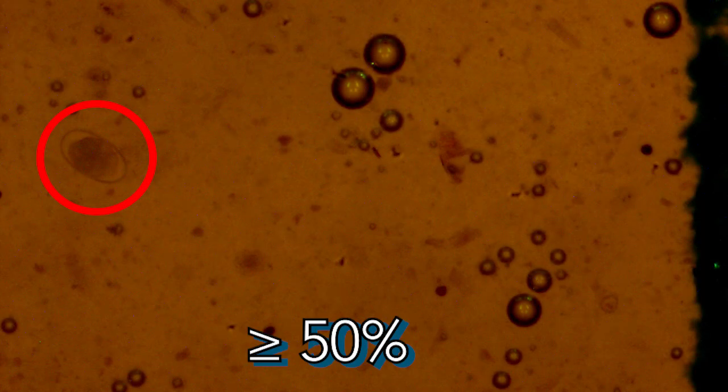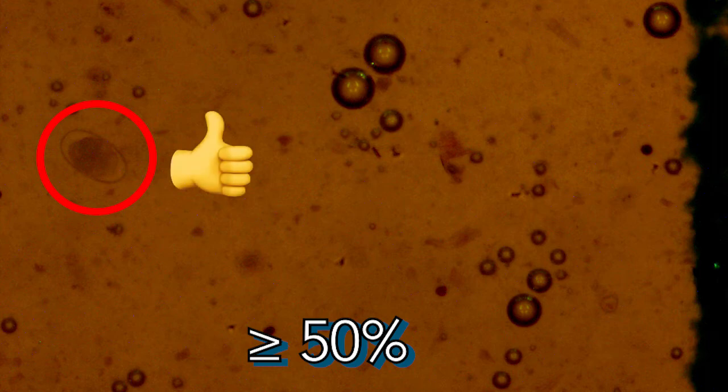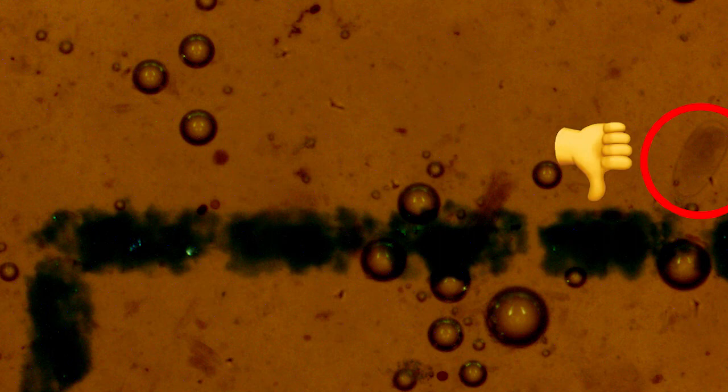Now the eggs that you do want to count would be those that are 50% or more within the grid. If they are right on that line but mostly outside of the grid, do not count them. And make sure to count all eggs inside the grid only once.